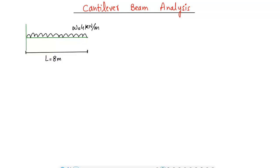Welcome back to the Civil Engineering YouTube channel. In today's lecture we are going to analyze a cantilever beam. The cantilever beam has a length of 8 meters with a uniformly distributed load of 4 kN per meter acting on it. We need to find the support reactions, shear force diagram, and bending moment.